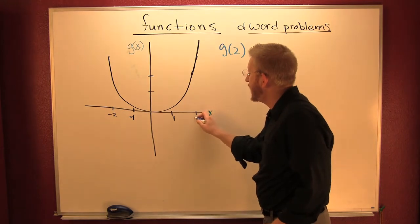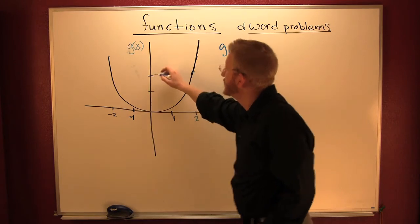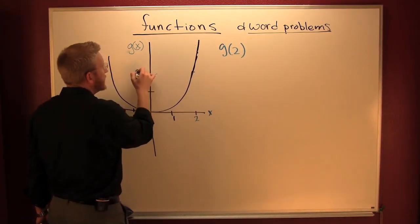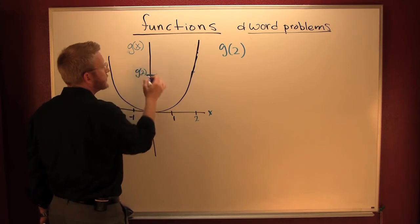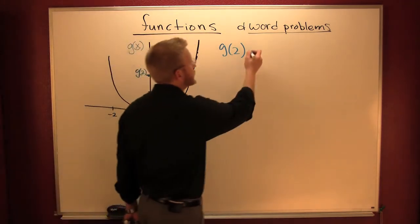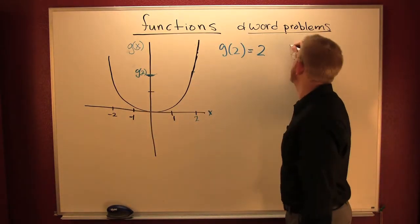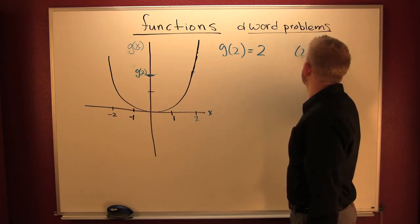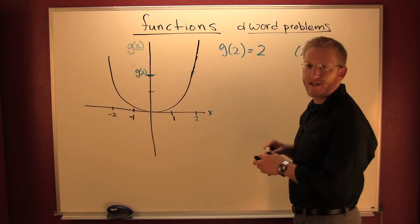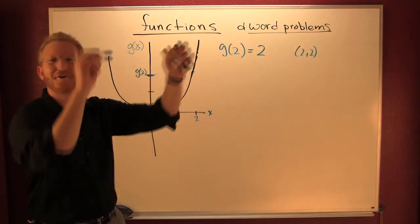What am I trying to do? I'm trying to go here to two. I want to find out what G of two is. This right here is G of two. What is that? It is two. G of two is two, which corresponds to the point (2, 2).